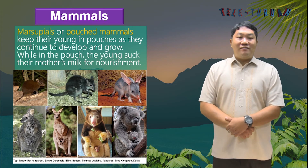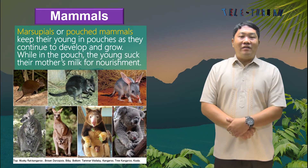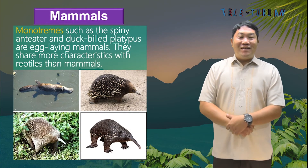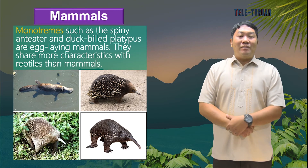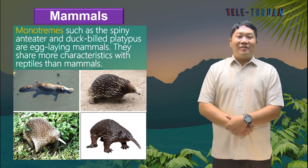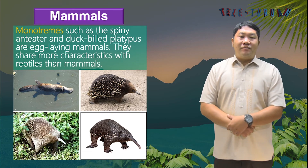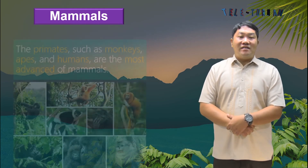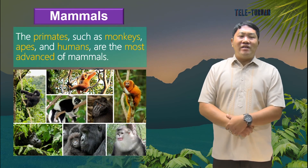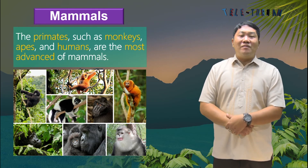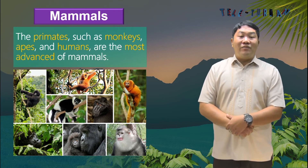Kangaroos and koalas are marsupials. Some mammals give birth by other means, such as monotremes. Monotremes such as the spiny anteater and duck-billed platypus are egg-laying mammals. They share more characteristics with reptiles than with other mammals, and their mammary glands are also not as developed. Mammals come in different forms and sizes, from small rodents to large whales and elephants. The primates, such as monkeys, apes, and humans, are the most advanced of mammals, with higher intelligence coming primarily from their larger brains.